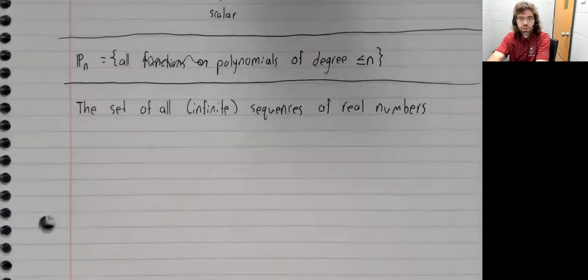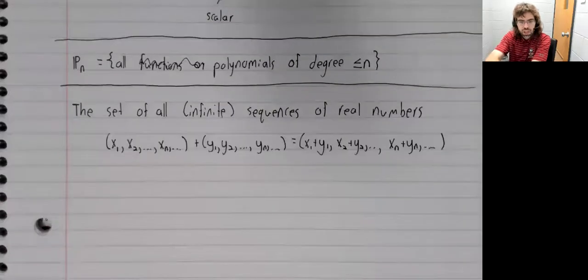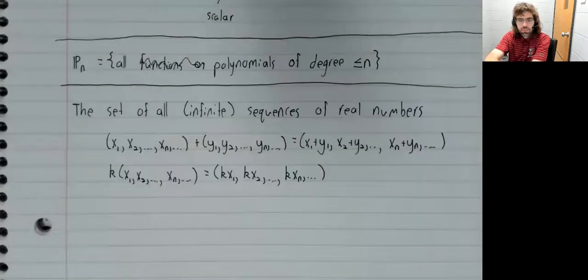One more example: the set of all infinite sequences of real numbers. Addition is defined component-wise, scalar multiplication is defined in the natural way.